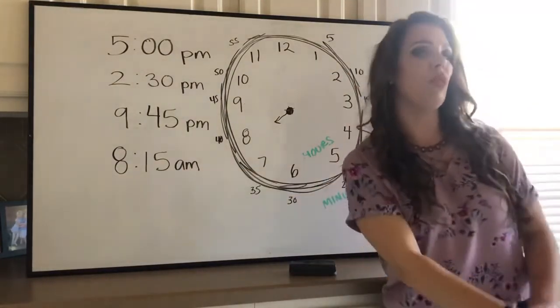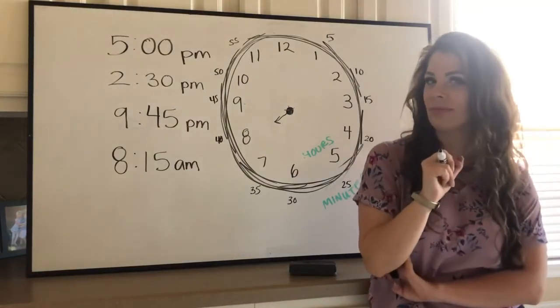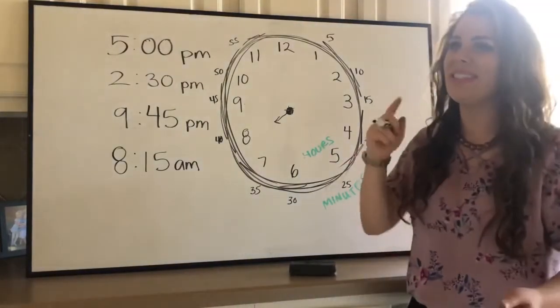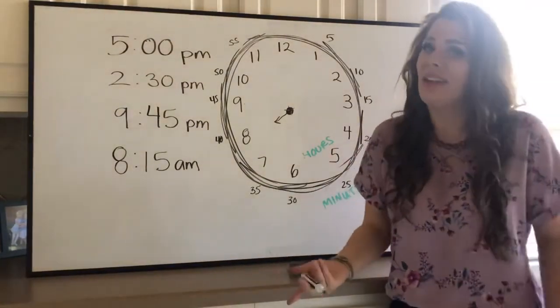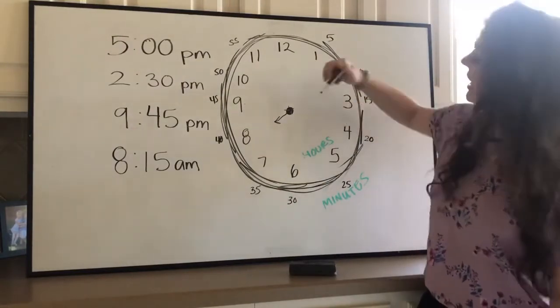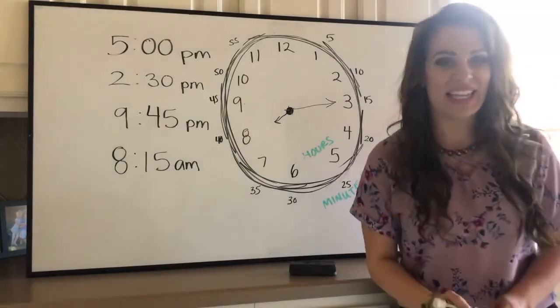And 15, where would that be? Do you know? Yeah, that's right. I think it would point to the three, because five times three is 15, but also I can skip count if I want. Five, 10, 15. So 8:15 would look a little something like that.